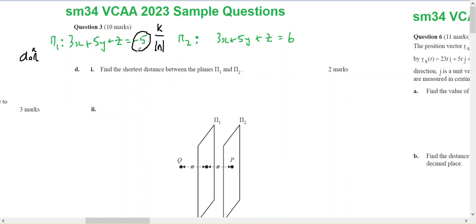So that's going to be square root of 9 plus 25 plus 4, which is root 35. So the distance is negative 5 on root 35 from plane 1 to the origin, and plane 2 is 6 on root 35.